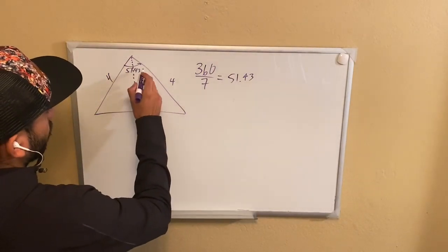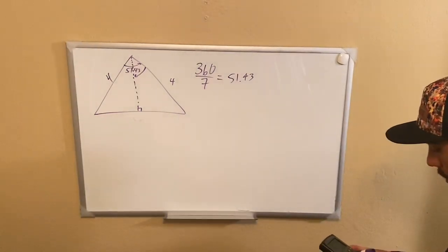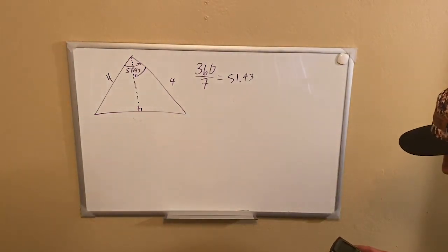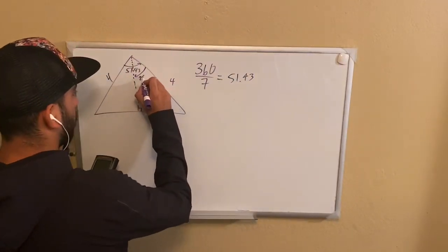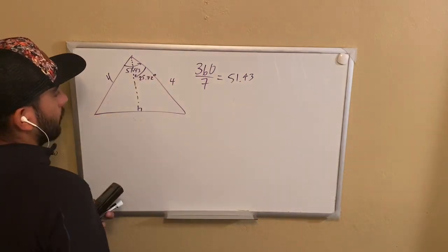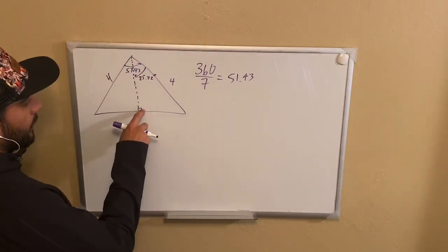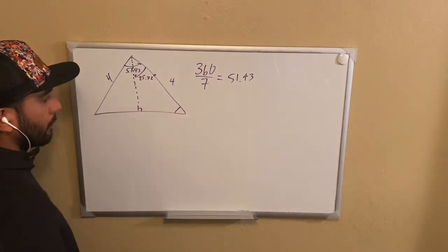So now we're going to cut this angle in half, and that's going to give us 51.43 divided by two. That's going to give us 25.72 degrees. Because this is 90, this is 25.72, I can easily find the remaining angle.